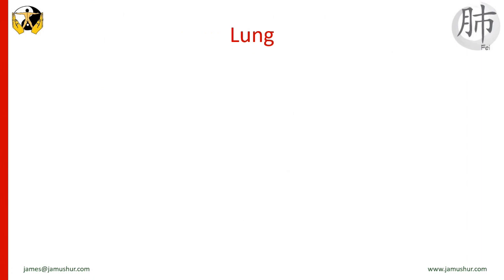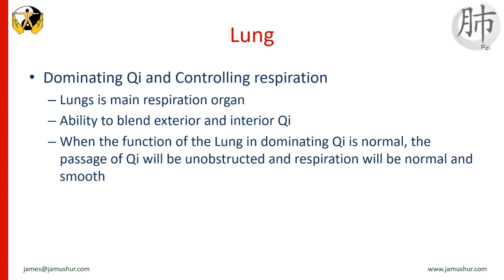When the function of the lung in dominating qi is normal, the passage of qi will be unobstructed and respiration will be normal and smooth. Deficiency of lung qi may lead to general lassitude, feeble speech, weak respiration, and shortness of breath. The qi extracted from food by the spleen is directed to the lungs, where it combines with air — kong qi — to form zhen qi. The lungs also disperse qi all over the body with the help of the liver. If this process is strong, the voice will be powerful, circulation will be good, energy will be high, and there will be strength in the limbs.